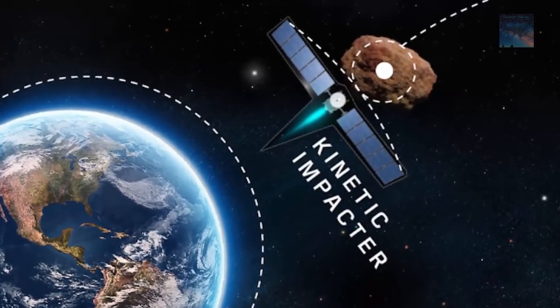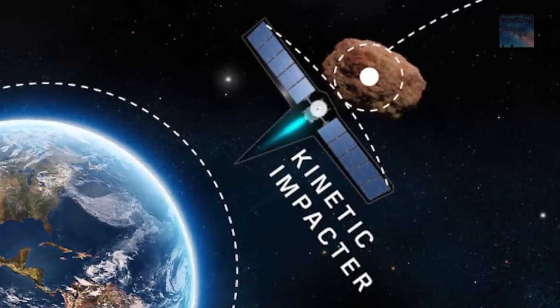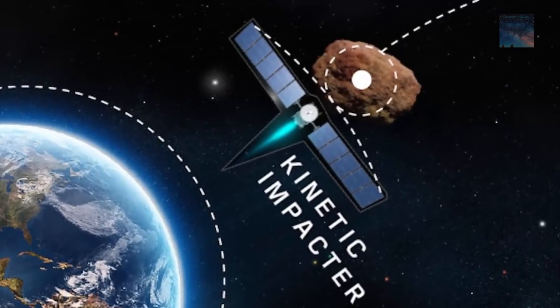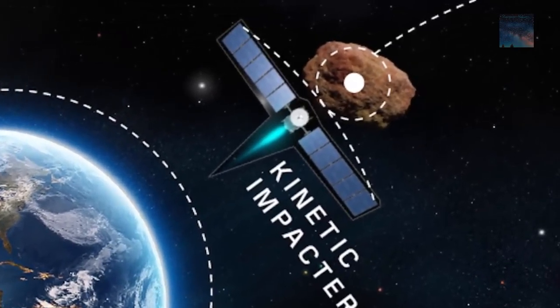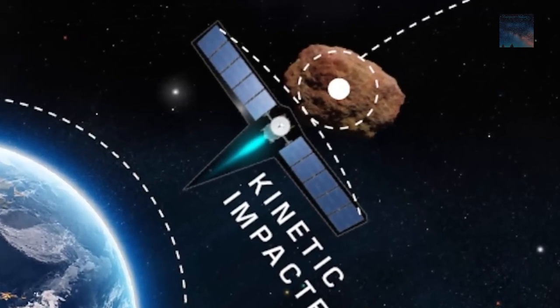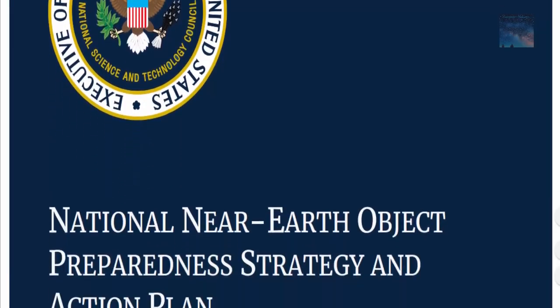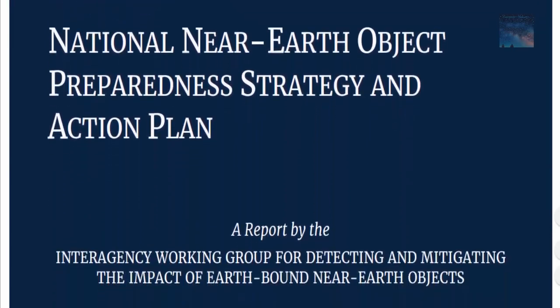The mission specifically involves testing a planetary defense strategy called the kinetic impactor technique, which involves striking the asteroid to shift its orbit. This strategy is the best possible means to defend Earth from future asteroid impacts. ESA's update on Hera comes after NASA's announcement made last week about the National Near-Earth Object Preparedness Plan.